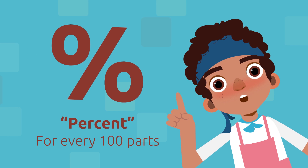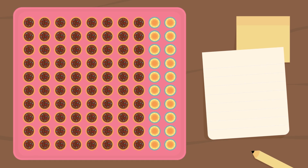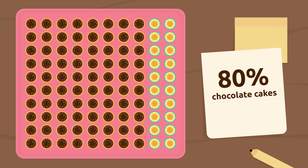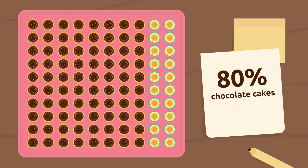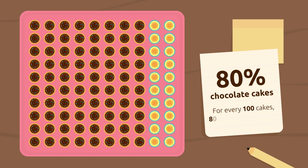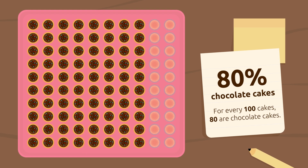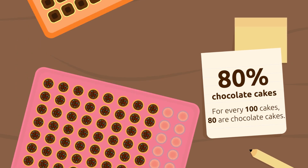Let's look at an example. Here we have 100 cakes, and 80% of them are chocolate cakes. We want to express this by saying that for every 100 cakes, 80 are chocolate cakes. The number of elements doesn't have to be 100.